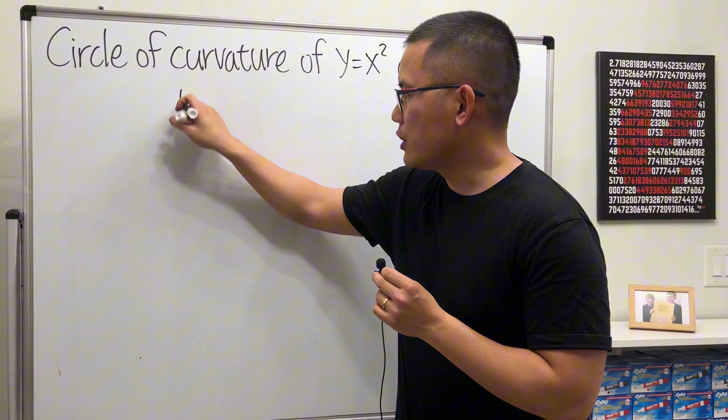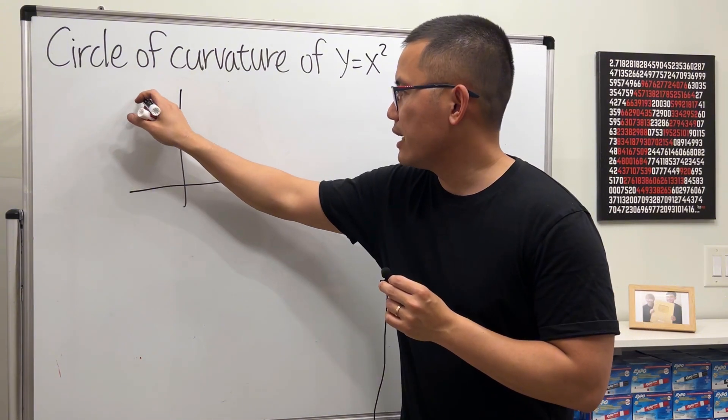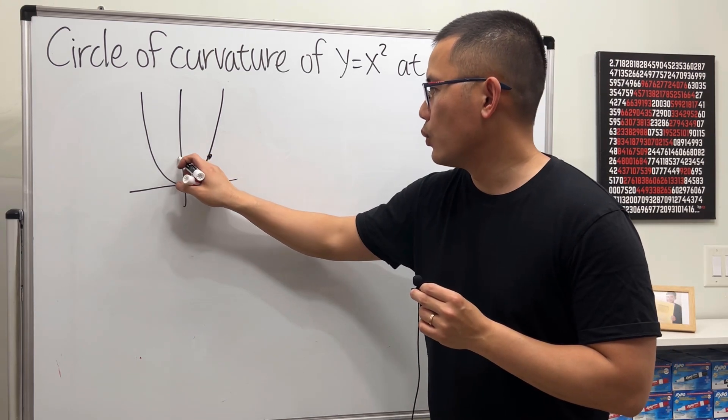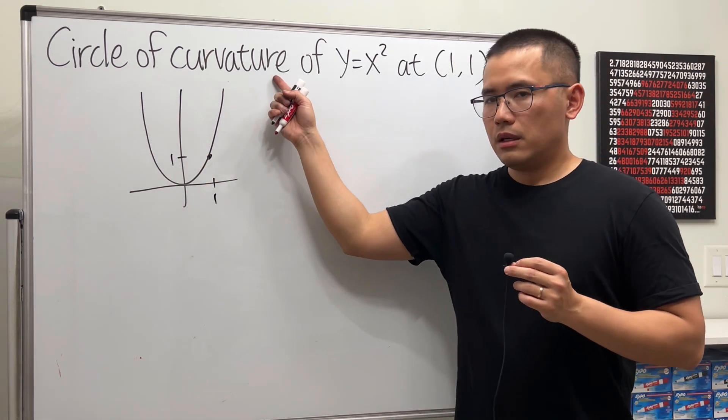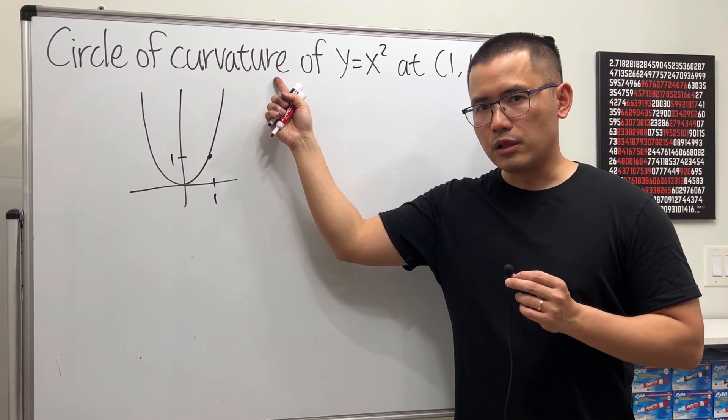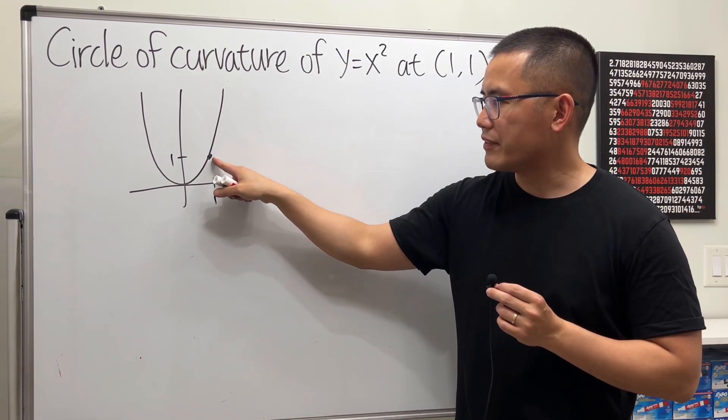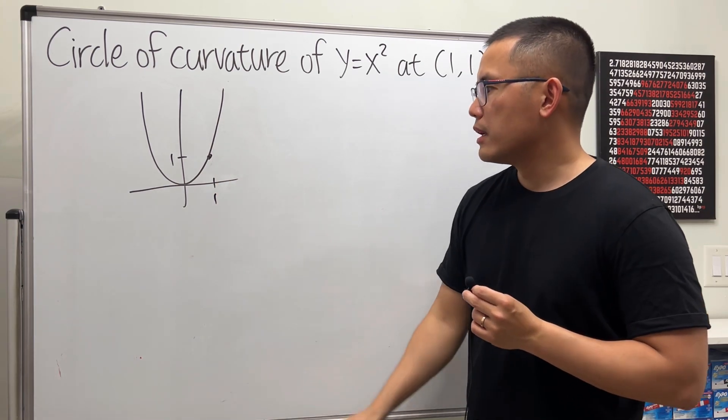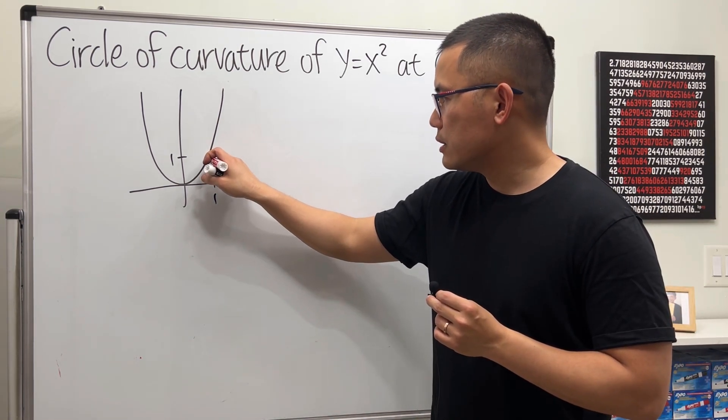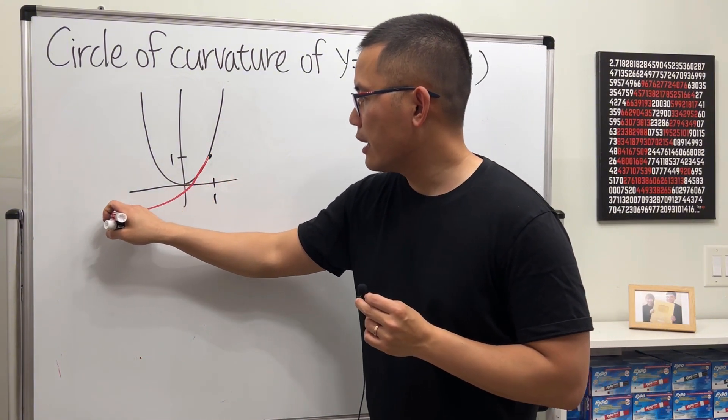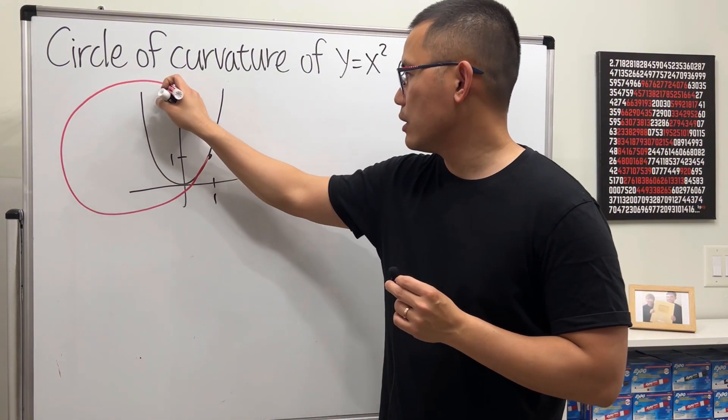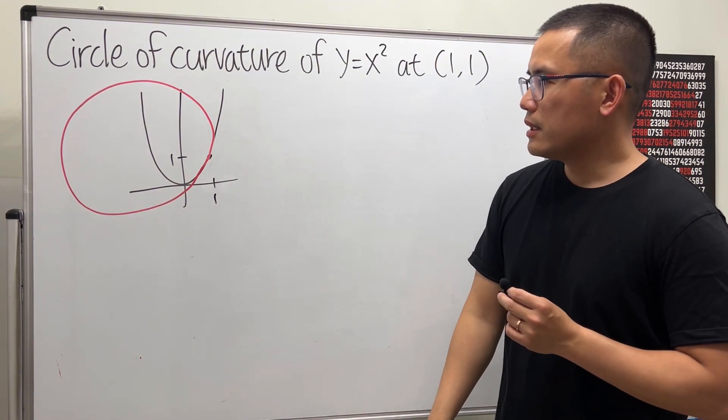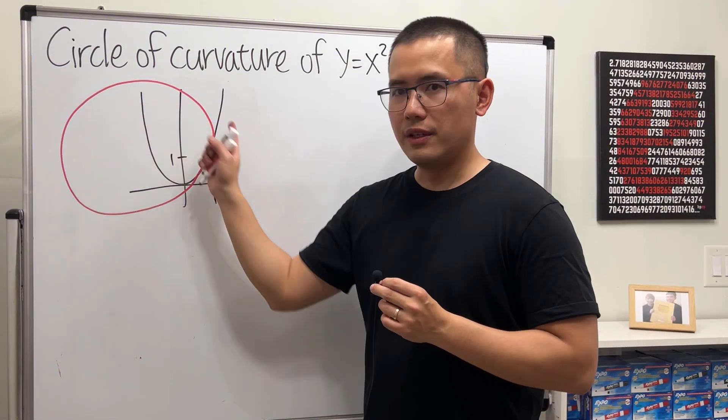First, let's take a look at the picture. Let's say this is how the parabola is, and here we have (1,1). The circle of curvature is a circle so that the circle and the curve will have the same tangent line here and also the same curvature. So it's going to look like this. Just draw a circle around it, like that.